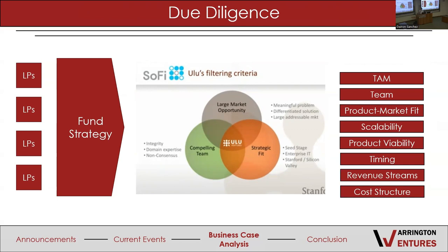Cost structure covers your fixed versus variable costs. Variable costs typically come from the amount you're producing; fixed costs are things you have to pay no matter what. That's the general due diligence — the background on the company you need to know going into the future.